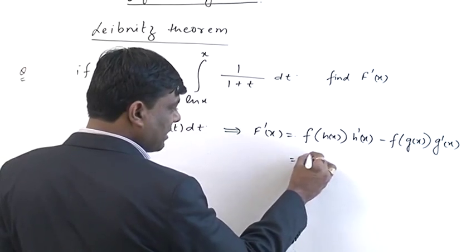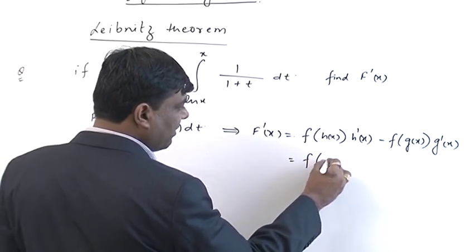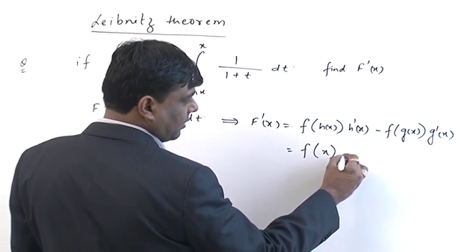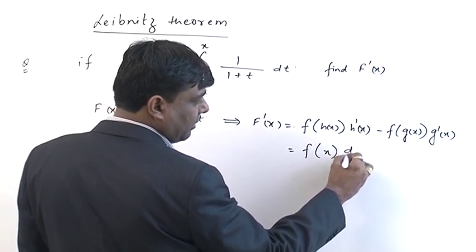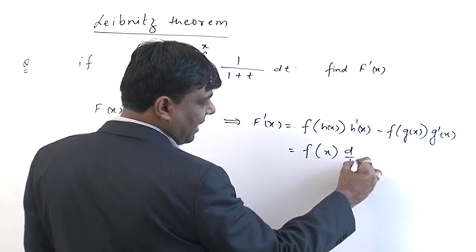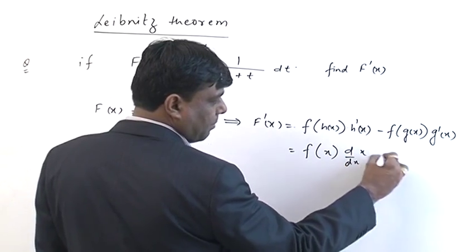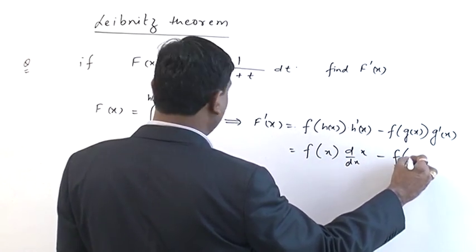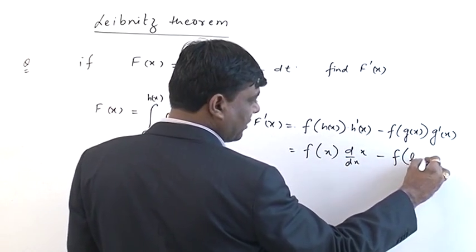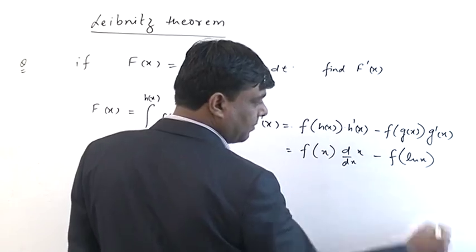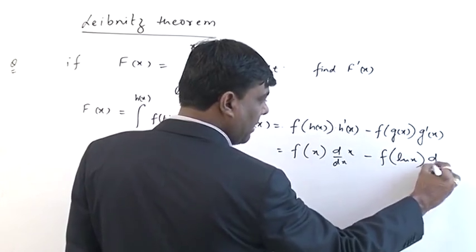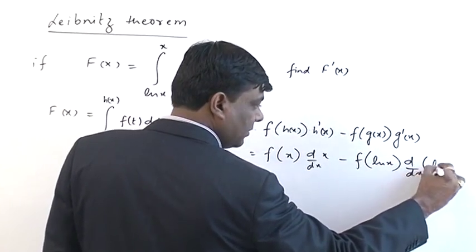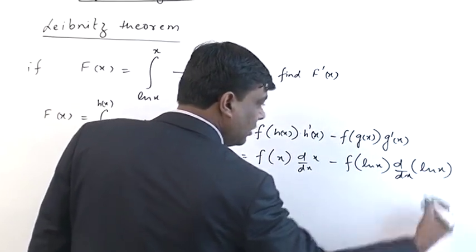So we apply this to our limits: function of h(x) which is x, times d/dx of x, minus function of g(x) which is ln(x), times d/dx of ln(x).